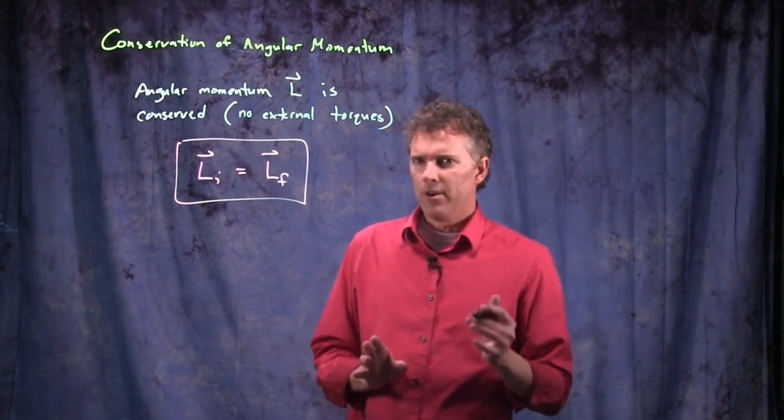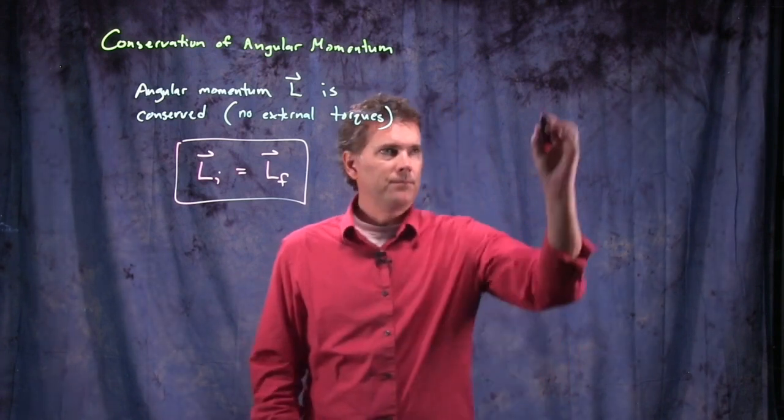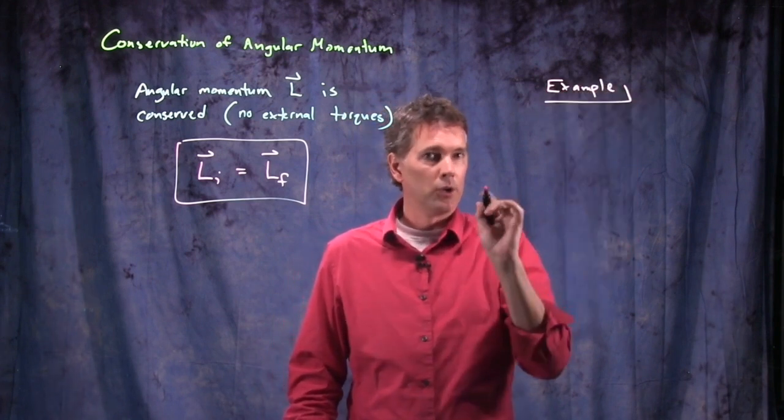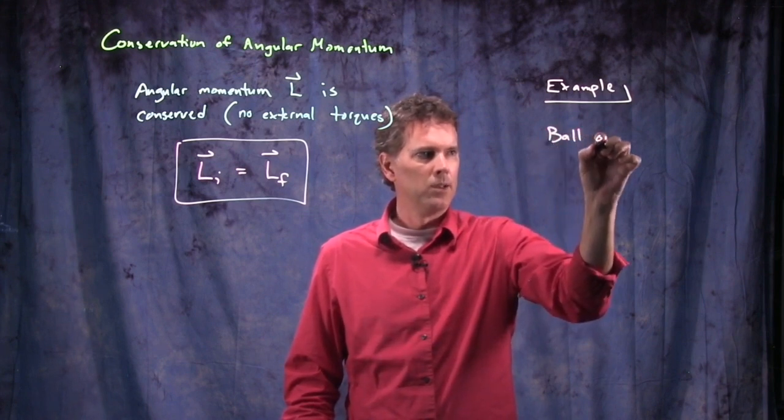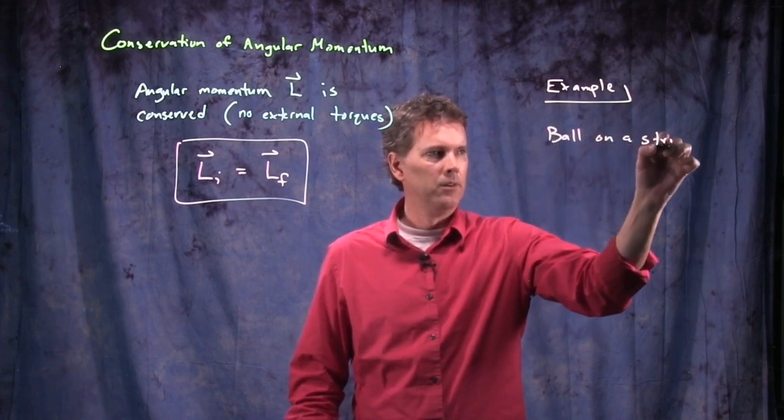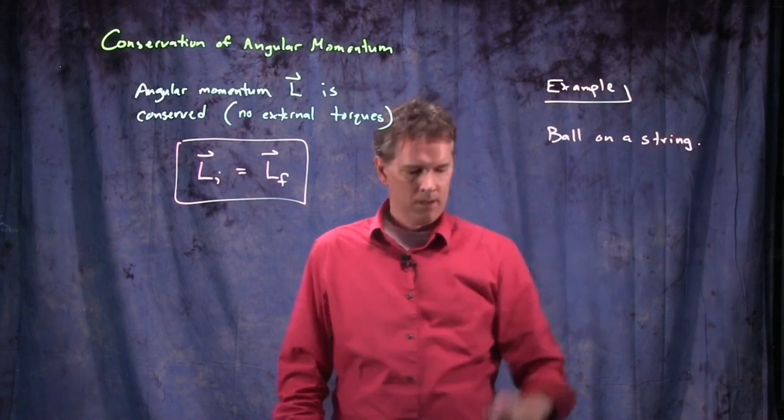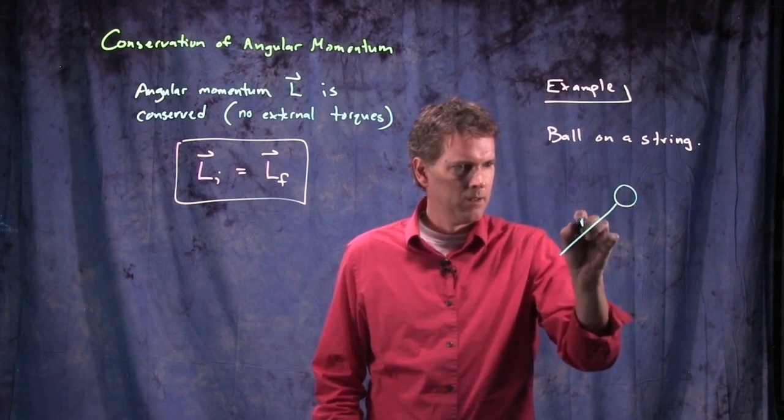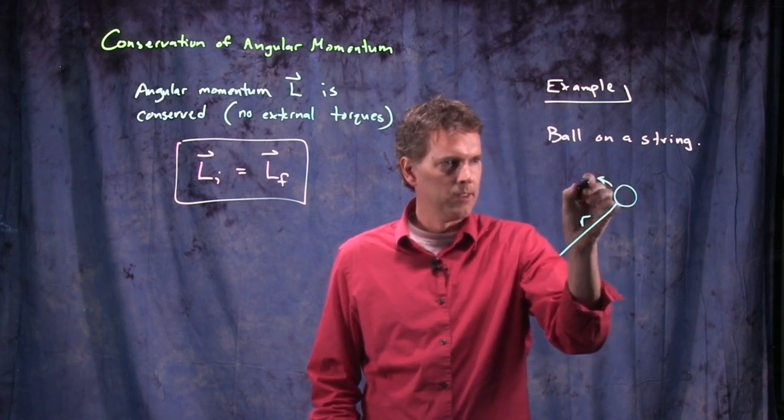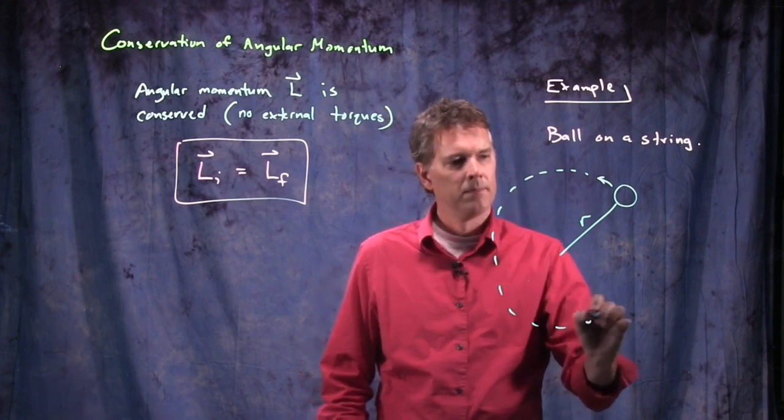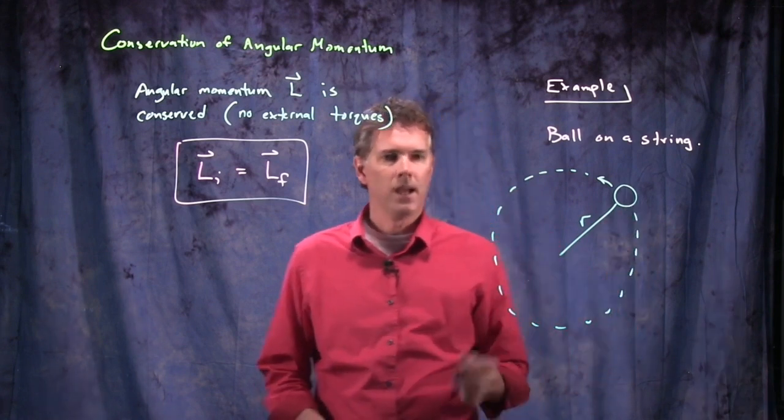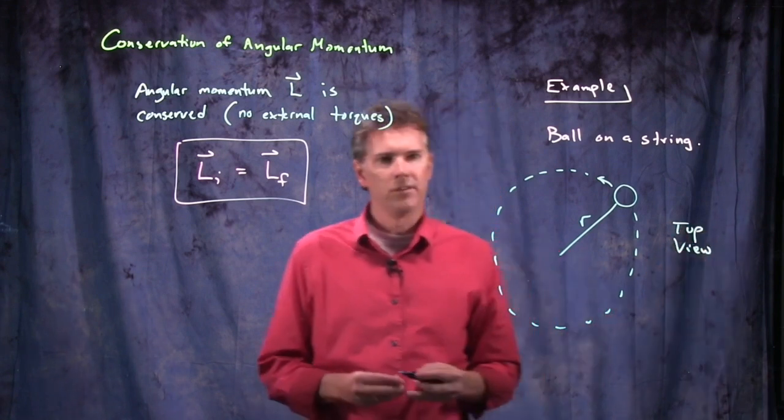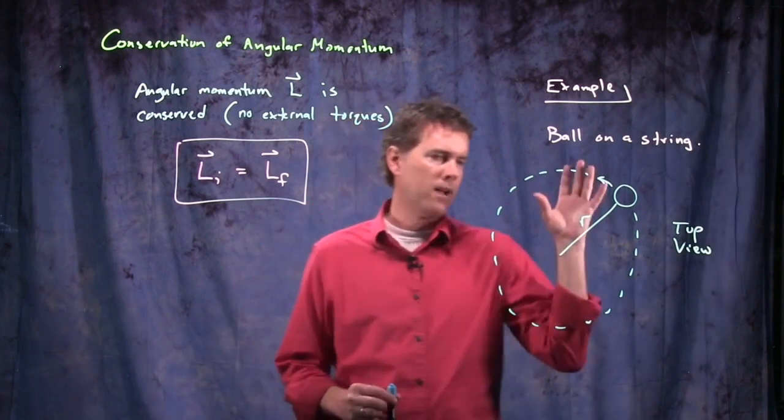Alright, so let's try a very simple example. Let's say that we take our good old ball on a string. We love this example because it's easy to do. Here's our ball on the string. It's going around like this in a circle. And this is a top view. So we're spinning the ball around in a horizontal circle and we're looking at it from the top.